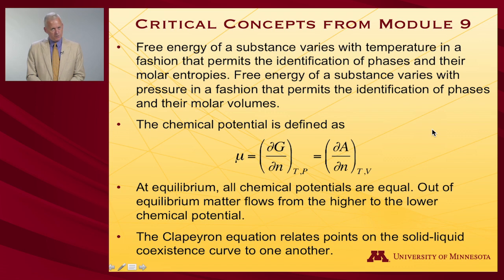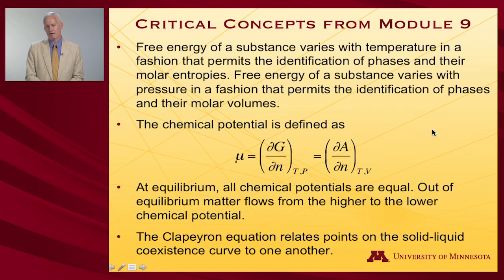We used two equations to look at changes in phase equilibria — melting points and boiling points — as a function of changes in temperature and pressure. The first was the Clapeyron equation, which was most useful when looking at solid-liquid transitions and not particularly useful when a vapor phase was involved.